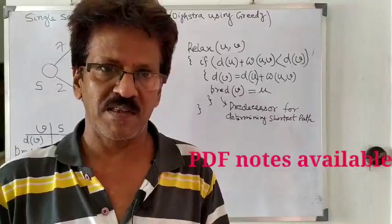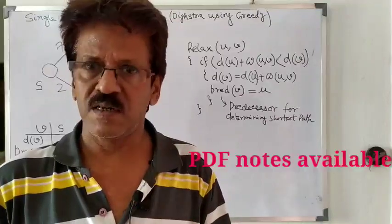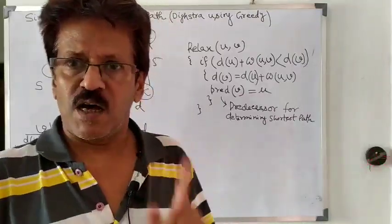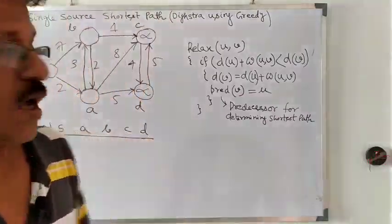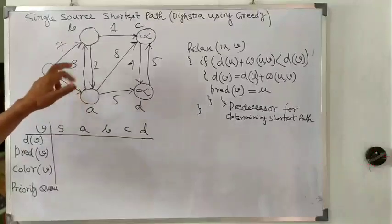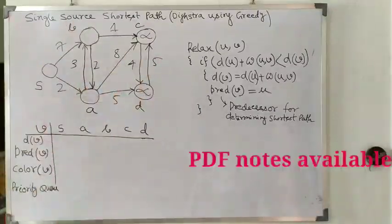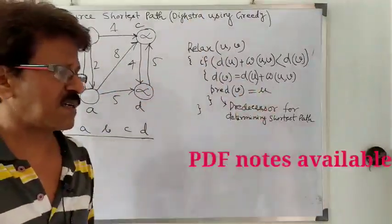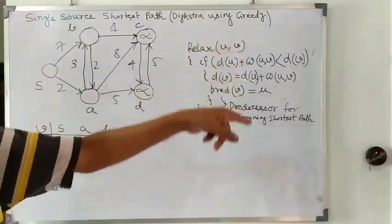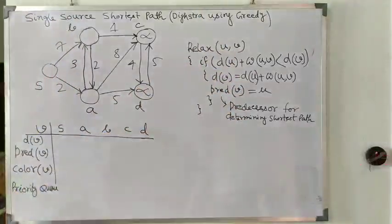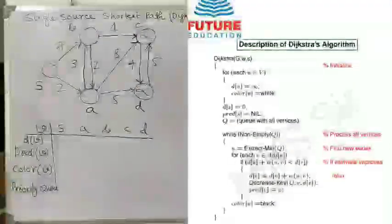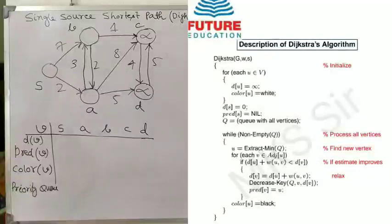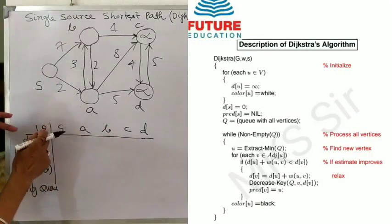The same algorithm can be applied on the directed graph also. Now choose an example — on the right-hand side, the algorithm is visible. You can see that I will explain each and every step from that algorithm. First, the step is the initialization portion. Initialize all the vertices — we have to follow a table.